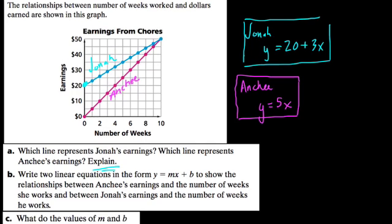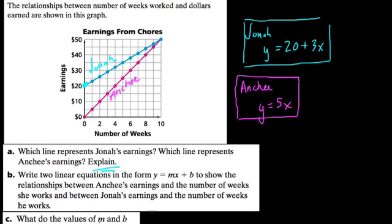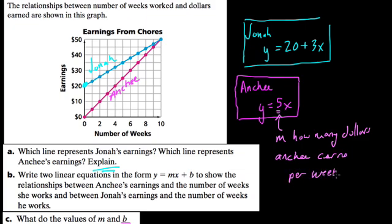Okay, in part C, they want to know what the values M and B in each equation tell about the relationship between the number of weeks and dollars earned. Well, again, just to reiterate, here the $5 on Anchi is the slope M. That tells you how many dollars Anchi earns per week. That's the slope of the rate.